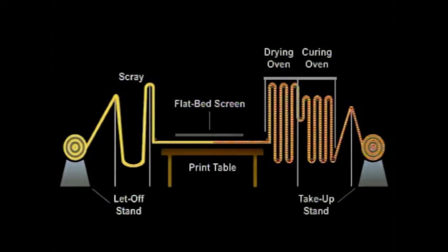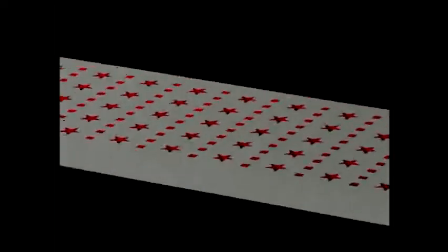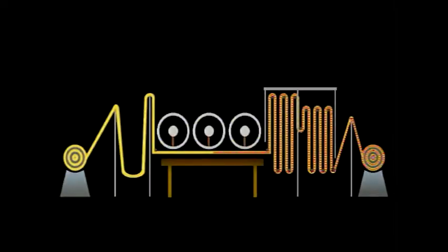Due to the production and pattern limitations of flatbed screen printing, inventive machinery manufacturers developed rotary screen printing in 1963. Imagine taking a flat screen and shaping it into a roll by sealing the ends together, and you have a rotary screen. This simple modification converts the semi-continuous process of flatbed printing to a continuous one.